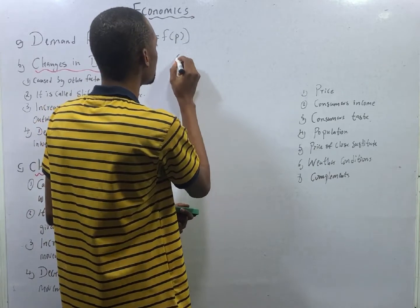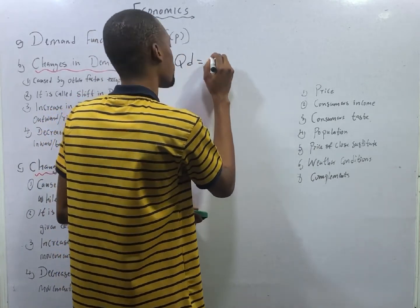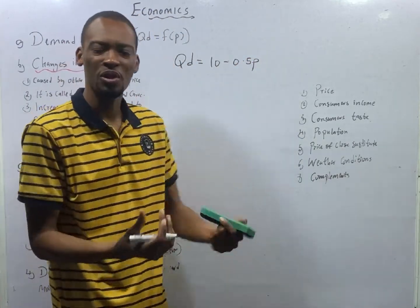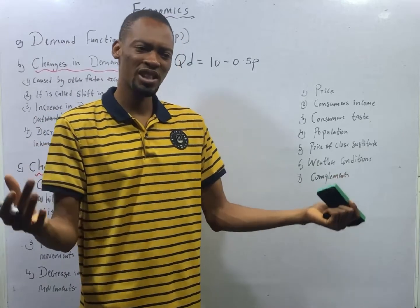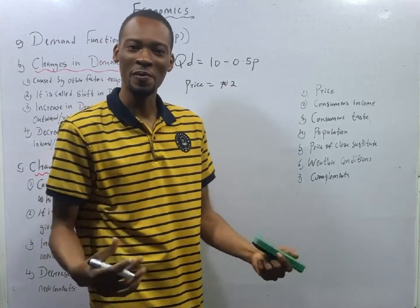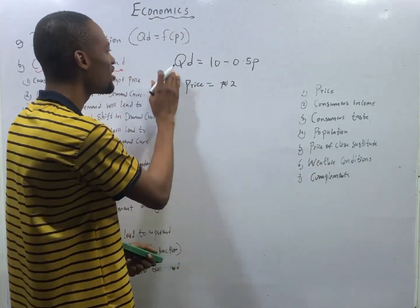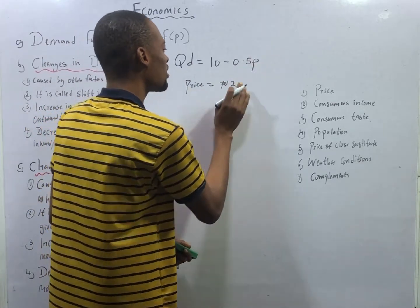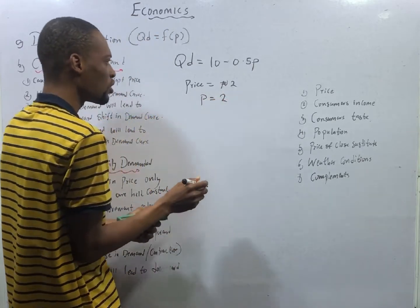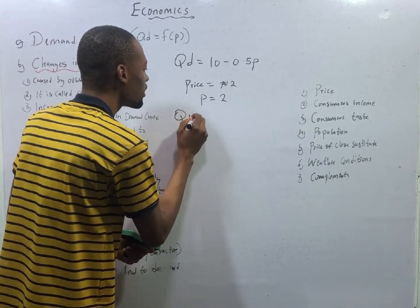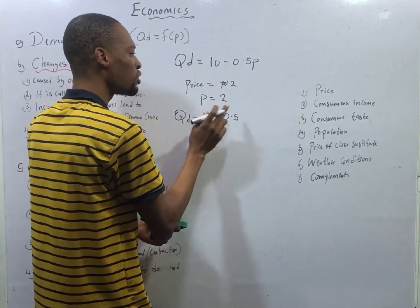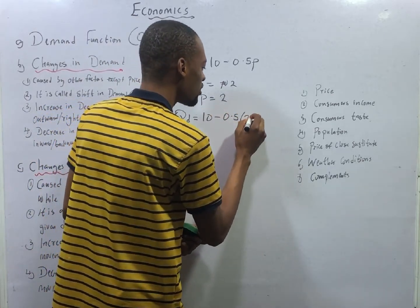Under demand function, you'll be given something like: quantity demanded equals, let's say, 10 minus 0.5P, and you'll be told what is the quantity demanded when price is equal to, let's say, 2 naira. What you simply do is say that, since quantity demanded is a function of price and price equals 2 naira, it means P, which is price, is 2. So quantity demanded equals 10 minus 0.5, and anywhere you see P, replace it with 2, so it is times 2.